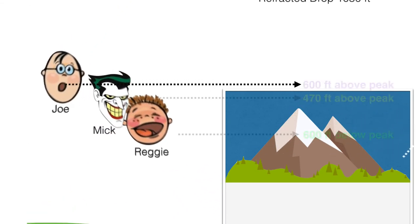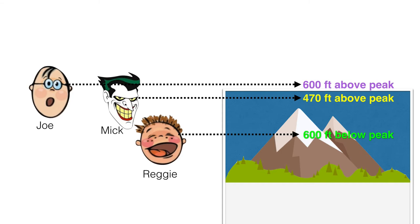So let's just put in one mountain and let's figure out where these three gentlemen are estimating eye level to be. So we have Reggie down there. He believes the Earth is flat, so the eye level should be 600 feet below. Joe says the Earth is a globe, so he says 600 feet above. And then Mick estimates 470 feet above because he's using standard refraction.